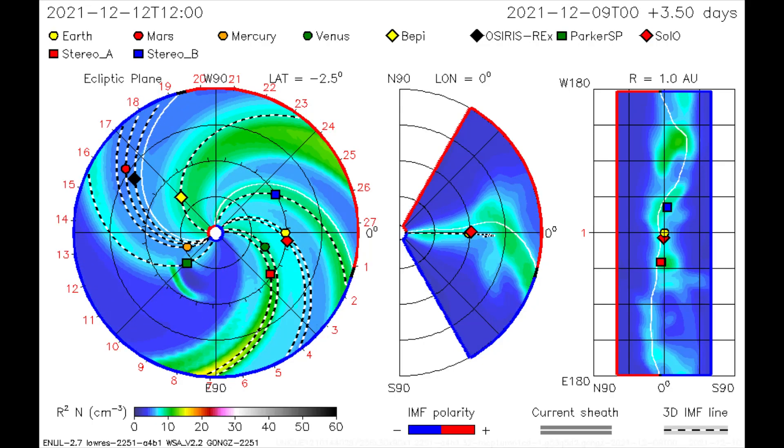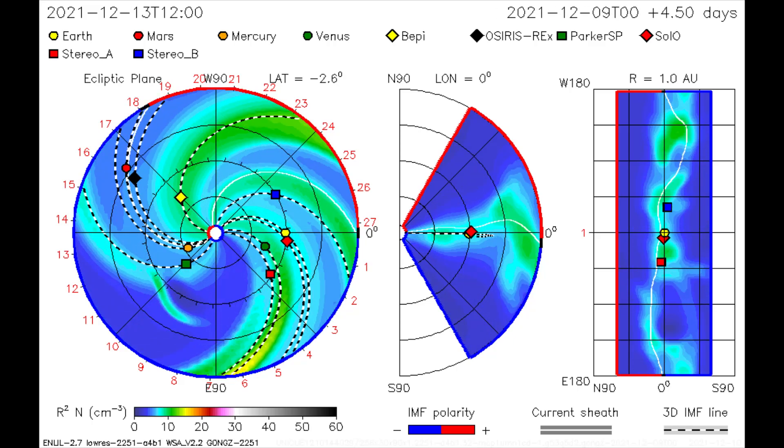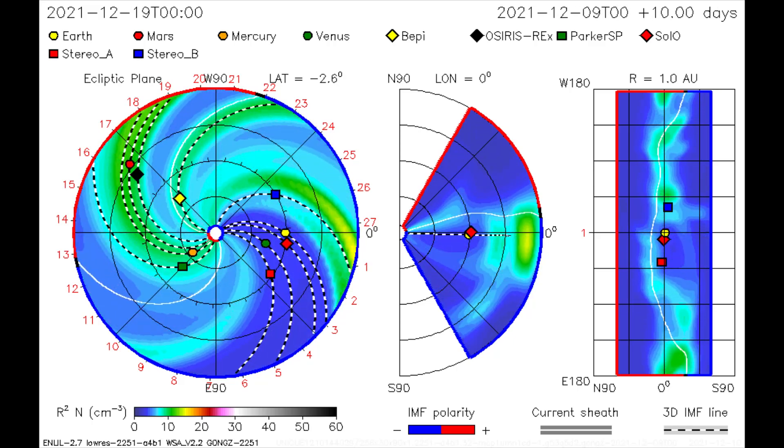On this CME model the latest flare from the 9th is mapped, as it gives Mercury and the Parker SP satellite a slight dose of radiation and solar wind.